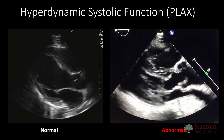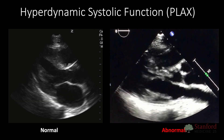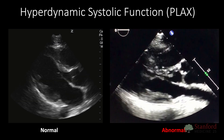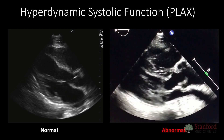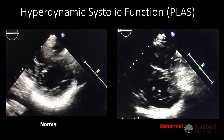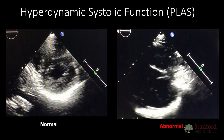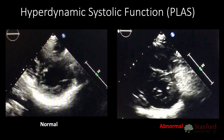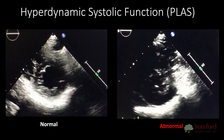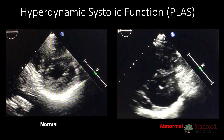Here's a video of a parasternal long showing hyperdynamic systolic function — you can see the LV cavity completely collapsing during systole. You can also assess for hyperdynamic function in several other views, particularly the parasternal short, where again you see the LV cavity completely collapsing during systole. If you see a patient like this who is hypotensive or perhaps septic, this may be an indication that they need more aggressive fluid resuscitation.